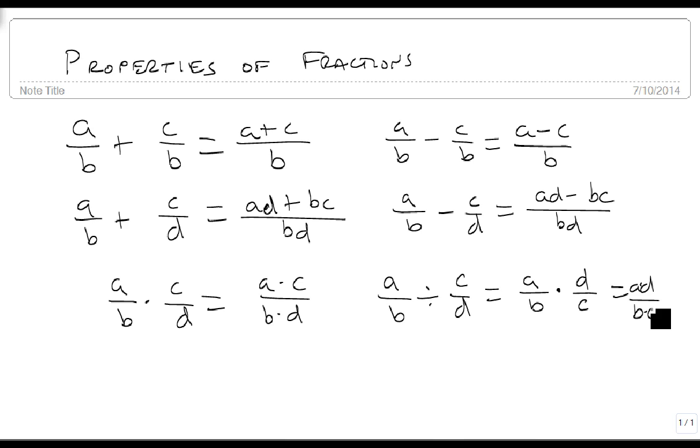It's also important to note that if we have a times c over b times c, since the c's are the same, they'll divide out, and we're left with a over b. And any time we see something like this, we need to work through it. So you need to stay on top of it very carefully to make sure that any time you have something in common on top and on bottom, it's divided out.